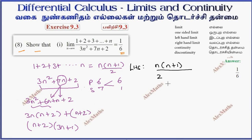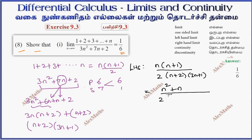So the denominator term is (n+2)(3n+1). The (n+2) from the numerator and denominator will cancel. After cancellation, substituting back, the expression simplifies. So 3n² plus 7n plus 2 is fully factorized.